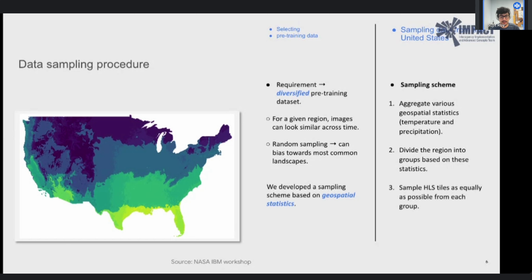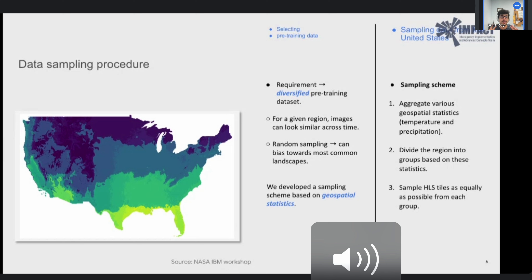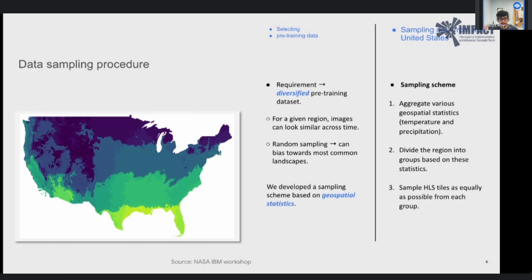A fundamental question when training these models is whether to train on all available data or sample it. Taking all HLS data means huge computation time, petabytes of storage cost, and a major bias problem — the satellite captures a lot of information that is not changing compared to information that is changing, leading to huge repetition in the dataset. To address this, we use a data sampling procedure aggregating statistics like temperature and precipitation, dividing into regional groups, and sampling HLS data equally from each group to reduce potential bias.